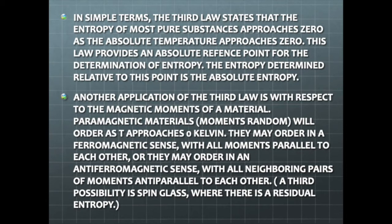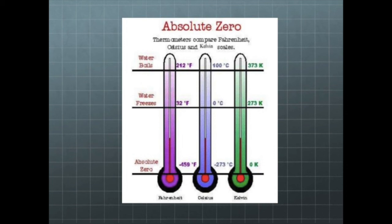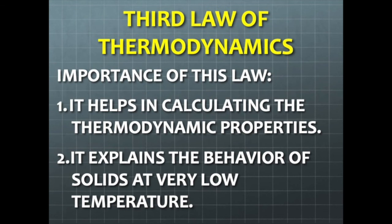Another application of the third law concerns the magnetic moments of a material. Paramagnetic materials with random moments will order as temperature approaches zero Kelvin — either in a ferromagnetic sense with all moments parallel, or in an anti-ferromagnetic sense with neighboring pairs of moments anti-parallel to each other. A third possibility is spin glass, where there is a residual entropy. The third law is important because it helps in calculating thermodynamic properties and explains the behavior of solids at very low temperatures.